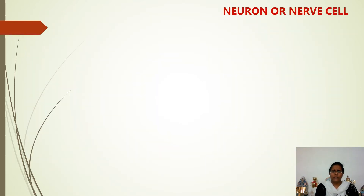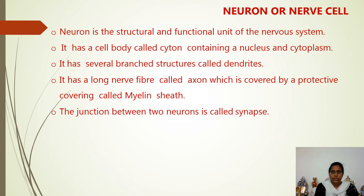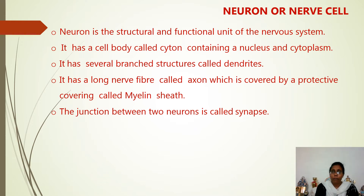So what is this nervous system made of? The nervous system is made of a network of cells called nerve cells, also called neurons. A neuron is the structural and functional unit of the nervous system, and it is the longest cell in the human body, measuring 90 to 100 centimeters. The neuron has a cell body called the cyton, which consists of a centrally placed nucleus surrounded by cytoplasm. The cytoplasm has several branch-like structures called dendrites, and the cytoplasm is extended into a long nerve fiber called the axon, covered by a protective covering called the myelin sheath.